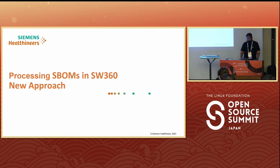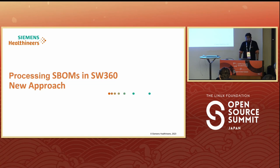To go a little bit back on the history, SW360 was created around 2014 at Siemens. Initially, Bosch and Siemens were collaborating on this tool. Later, Bosch had other plans, and we gave some part of the code to ORT and some part to Software 360. Right now, the major contributors and maintainers are Siemens, Siemens Healthineers, Toshiba, and Cariad, along with a few other contributors.